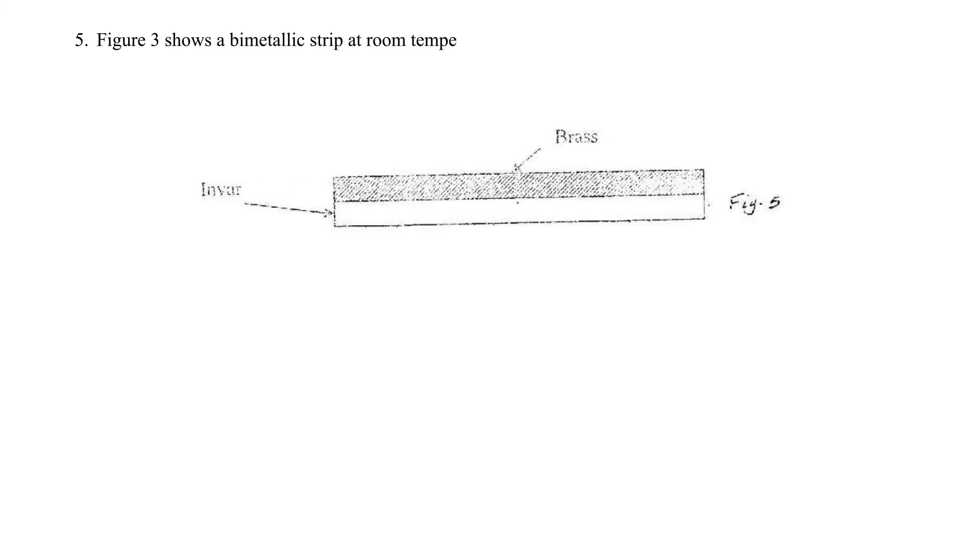Figure 3 shows a bimetallic strip at room temperature. Brass expands more than invar when heated equally. Sketch the bimetallic strip after being cooled several degrees below room temperature.